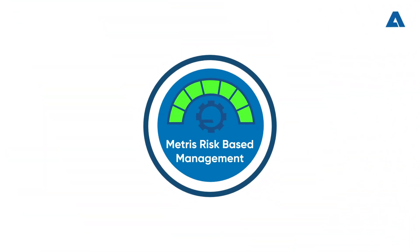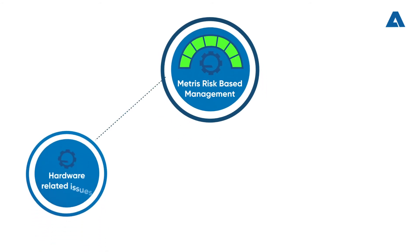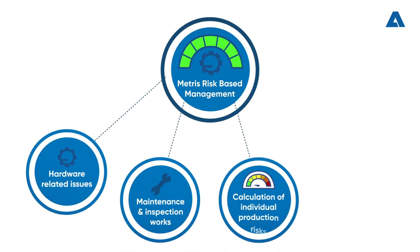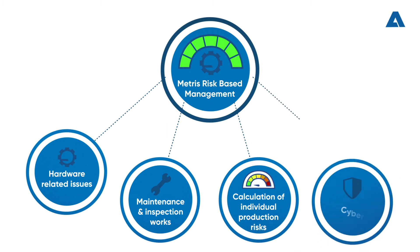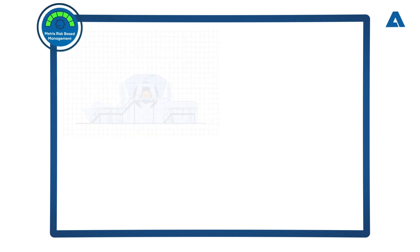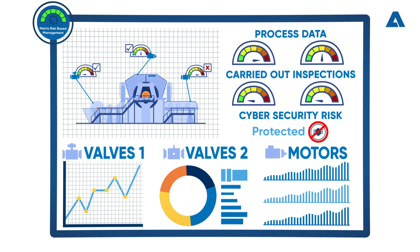Metris Risk-Based Management focuses on a mill-wide risk level based on hardware-related issues, maintenance and inspection works, calculation of individual production risks, cyber security risk. It's a comprehensive app that gives a detailed representation of each asset focusing on high-risk assets and therefore avoiding unplanned shutdowns.